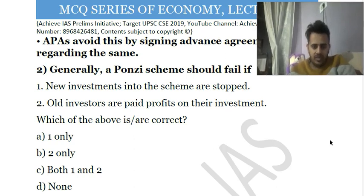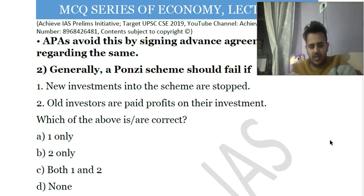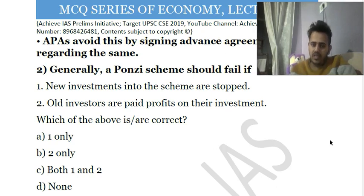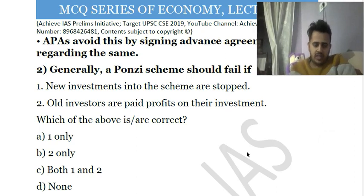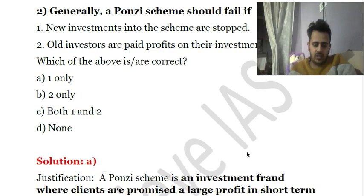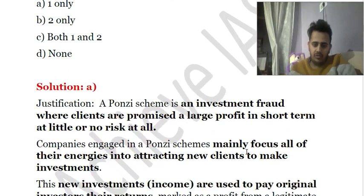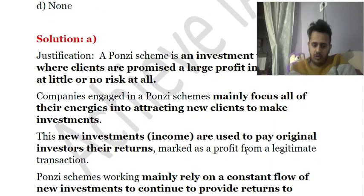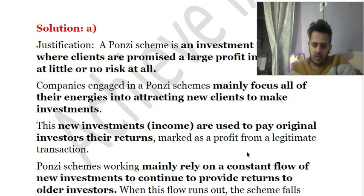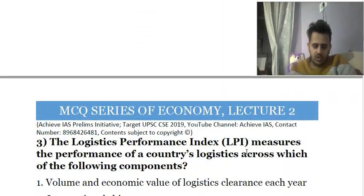Regarding statement (2): yes, old investors are paid profits, but that does not prove how a Ponzi scheme fails. The scheme fails when new investments stop coming in. The correct answer is (1) only. Ponzi schemes are investment frauds which depend upon a continuous flow of new clients, mainly focusing on attracting new investors.